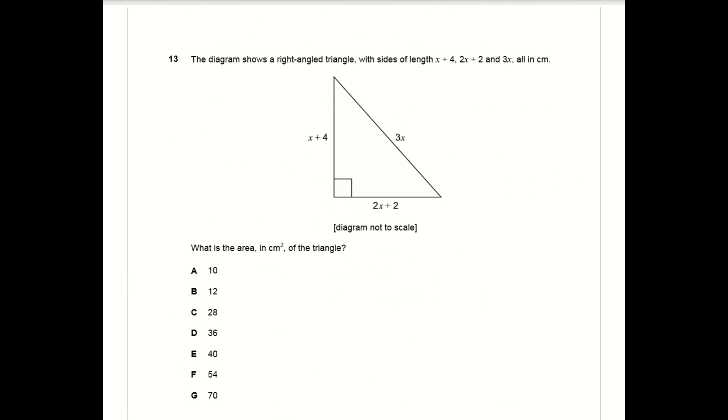Question 13 is a pretty standard Pythagoras question. You want to use Pythagoras theorem, a squared plus b squared equals c squared, to work out the value of x. Once you've obtained the value of x, noting that you get two values of x, one is positive one is negative, obviously because it's a length it can only take the positive value.